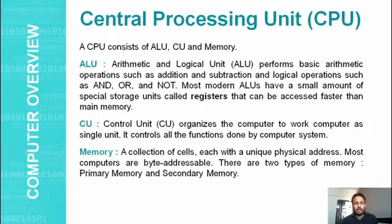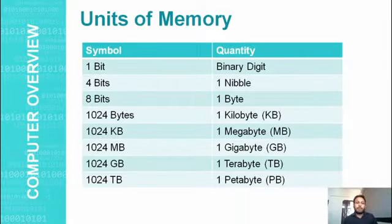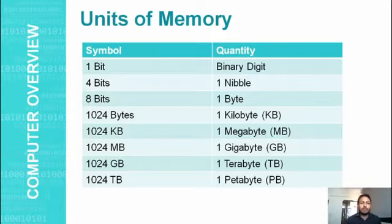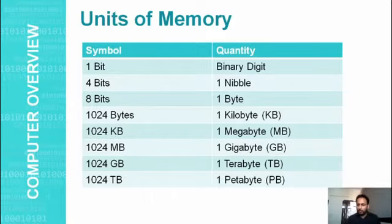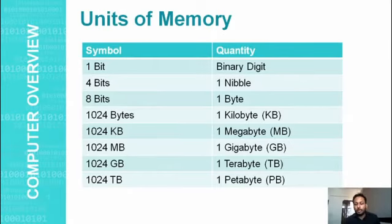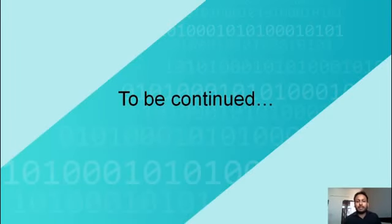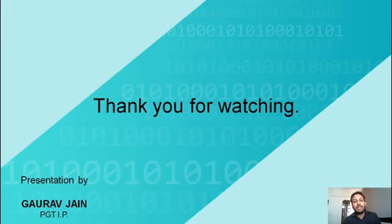Let's discuss the units of memory. The smallest unit of memory is called a bit — binary digit — which consists of two characters: zero or one. Four bits make one nibble. Eight bits make one byte. Then the cycle of 1024 follows: 1024 bytes equals 1 kilobyte, 1024 kilobytes equals 1 megabyte, and so on. We will cover the remaining topics in the next lecture. Thank you for watching — stay home, stay safe.